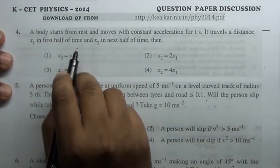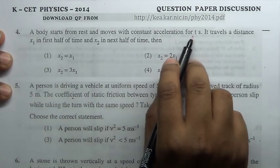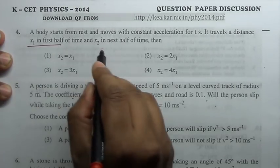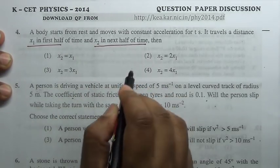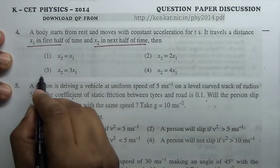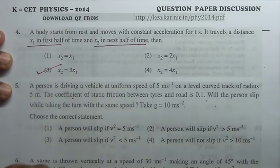A body starts from rest and moves with constant acceleration for t seconds. It travels a distance x1 in first half and x2 in next half of the time. Straightaway, the question is x2 equal to 3 times x1.